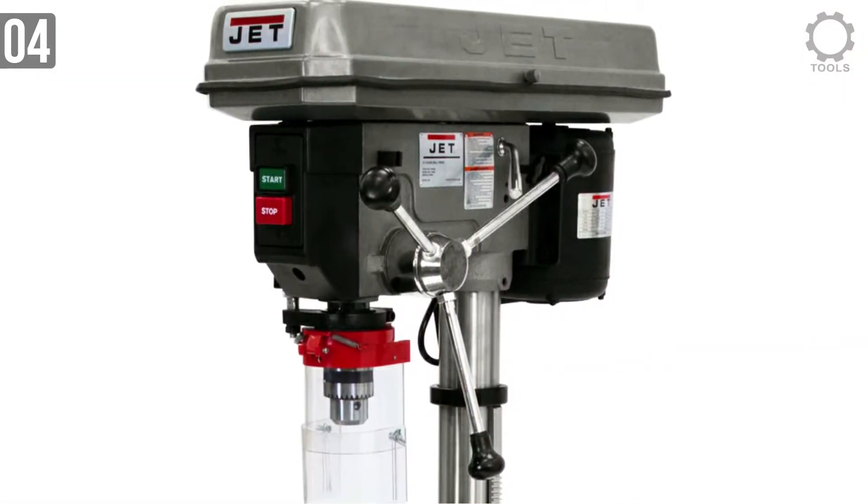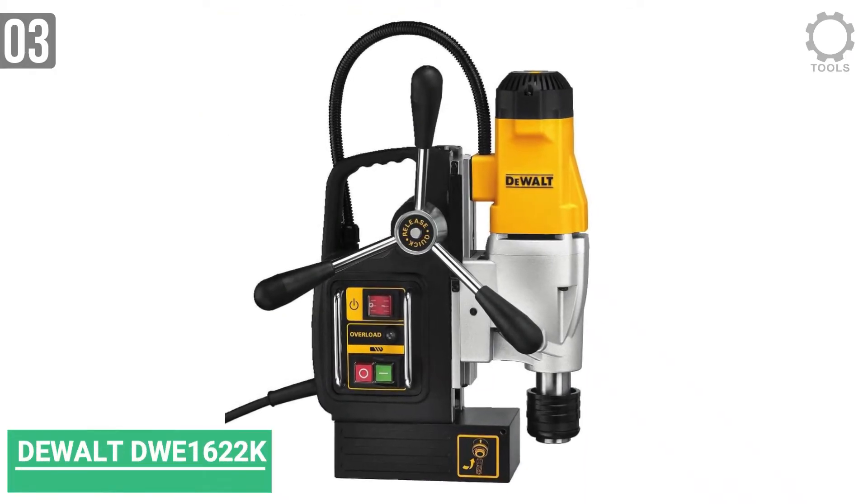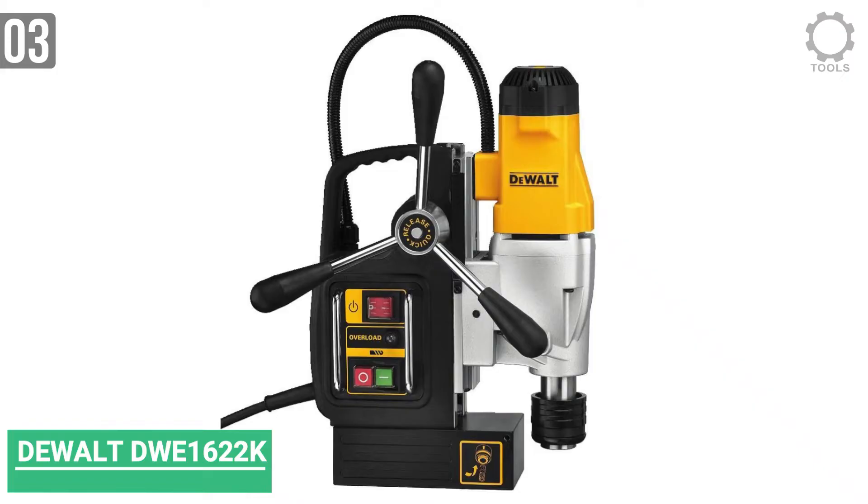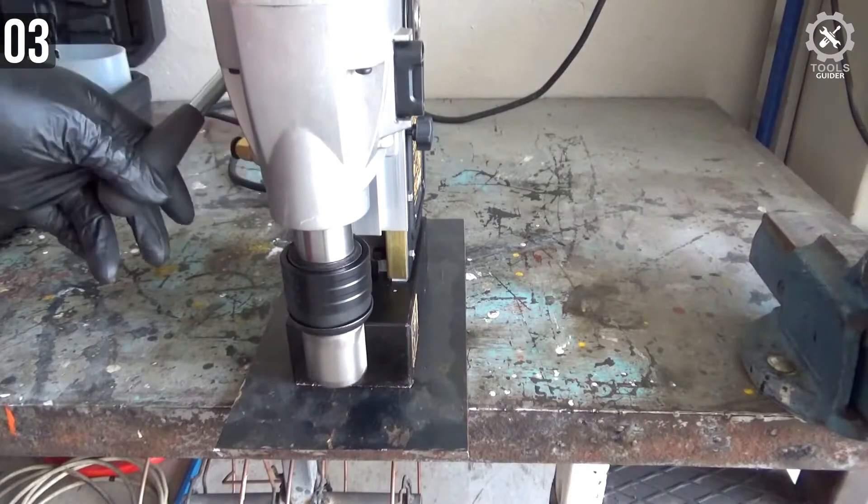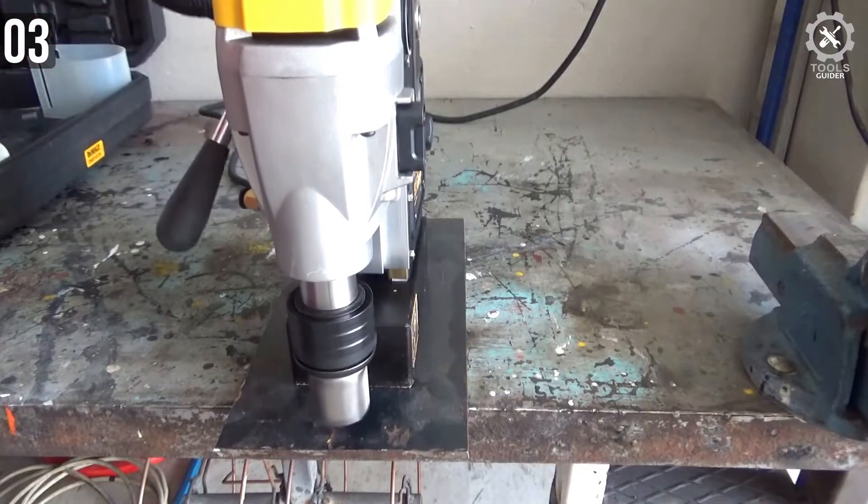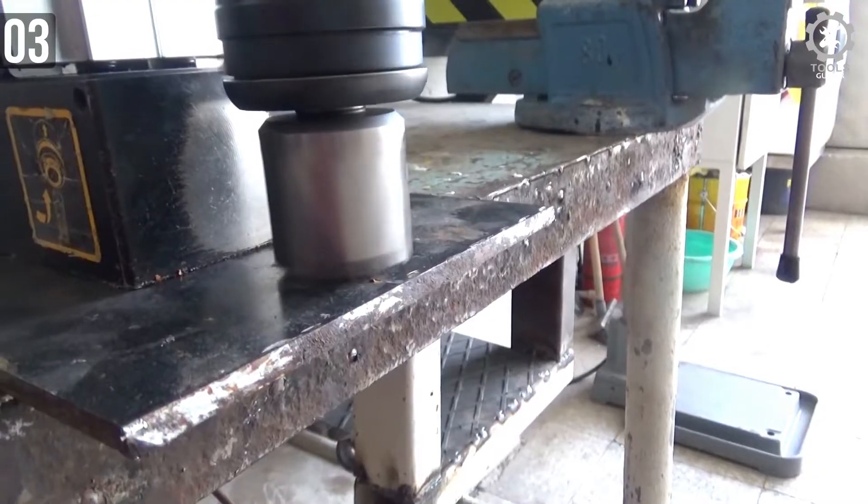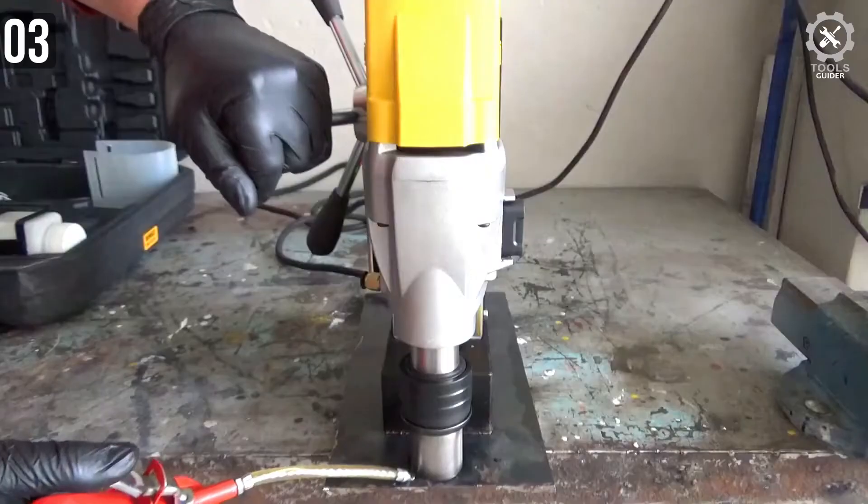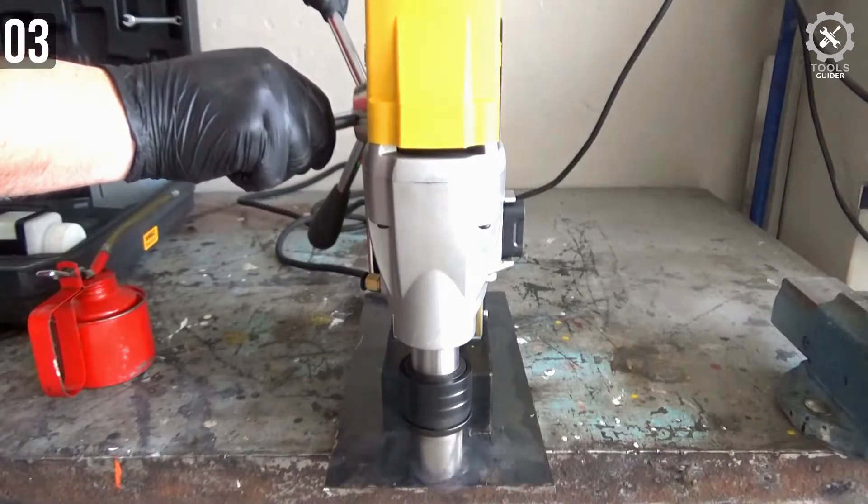Number three: Dewalt DWE1622K Drill Press. Compact and lightweight, the Dewalt DWE1622K is easy to transport from one job site to another. Its low weight makes it perfectly suitable for any kind of position during the drilling job, and all who deal with drilling steel on a daily basis will certainly appreciate this feature.